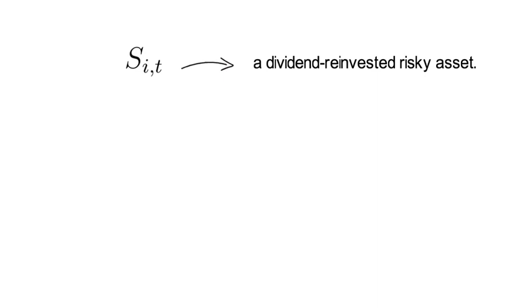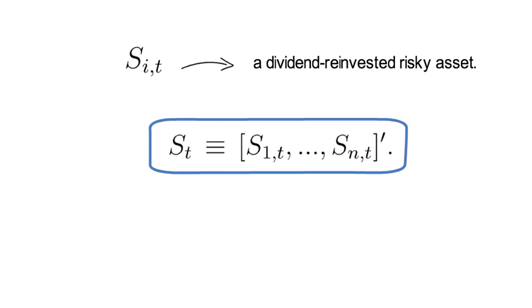we stack all risky assets into a vector S_t. Meaning S_t here is a column vector. First entry is S_1t and the last entry is S_nt.